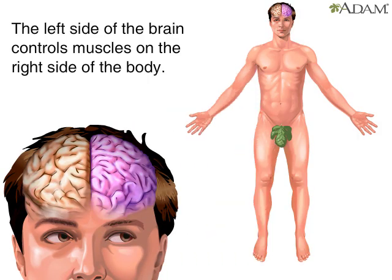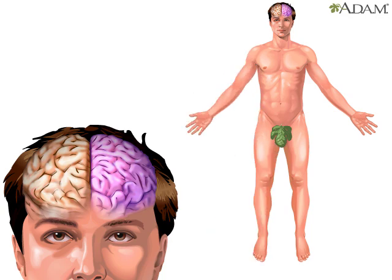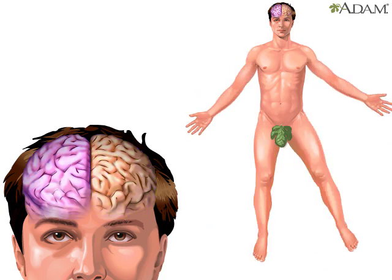Here, the left side of the brain is highlighted to show the control over right arm and leg movement, and the right side of the brain is highlighted to show the control over left arm and leg movement. The left side of the brain controls the muscles on the right side of the body, and vice versa.